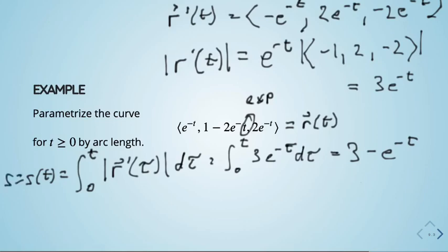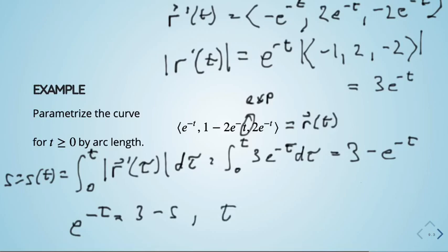So s(t) = ∫₀ᵗ 3e^{−τ} dτ = 3(1 − e^{−t}). Now solve for t in terms of s: e^{−t} = 1 − s/3, so t = −ln(1 − s/3).